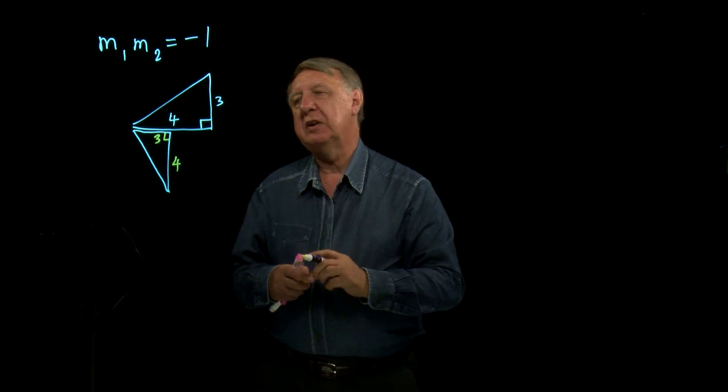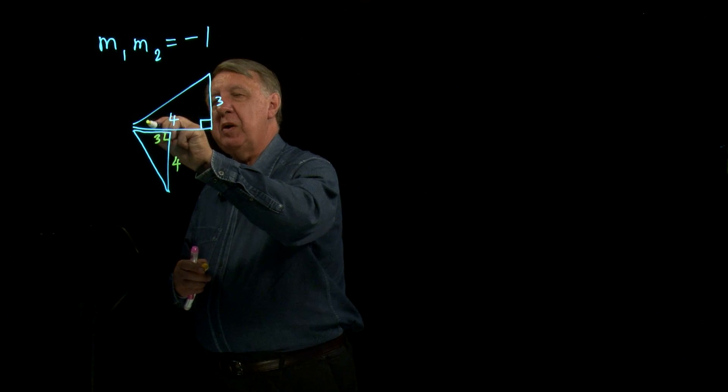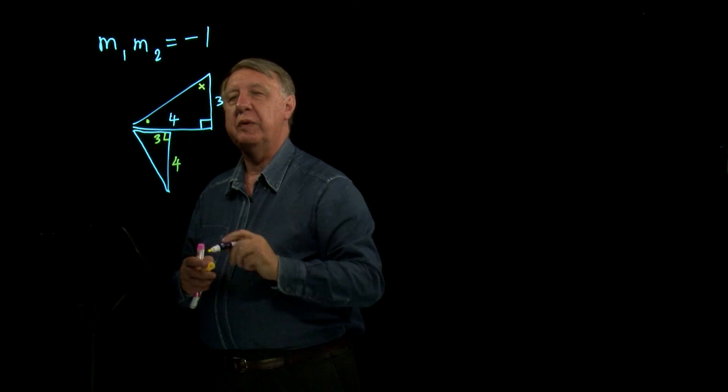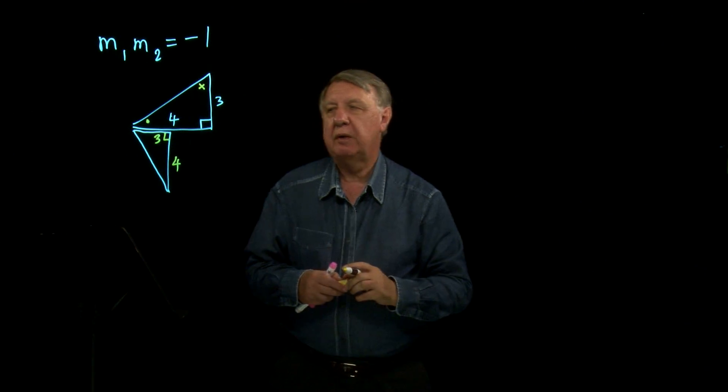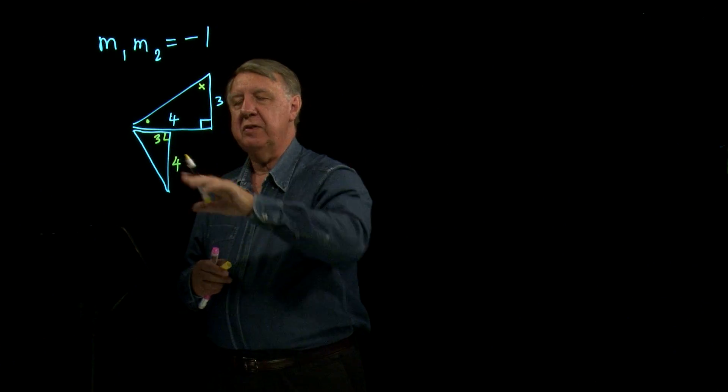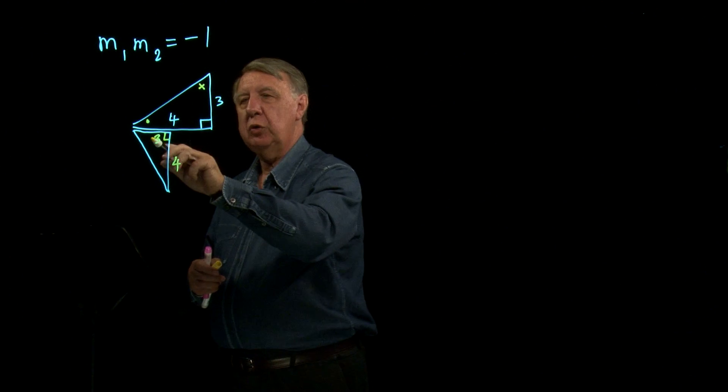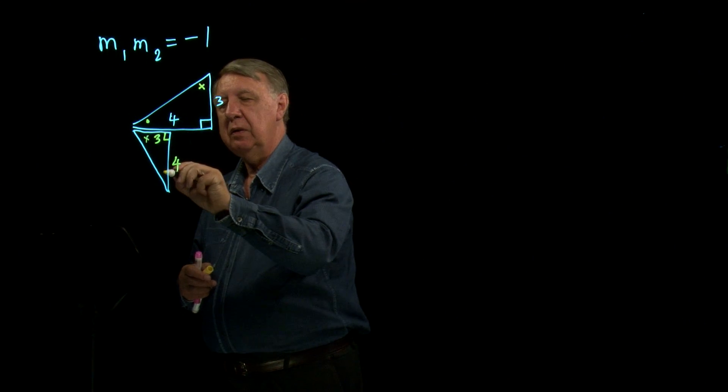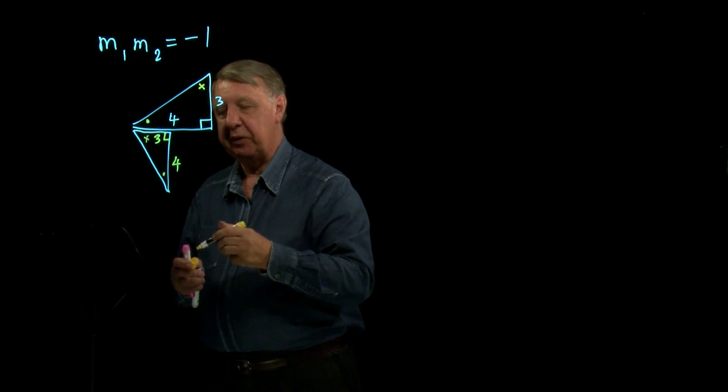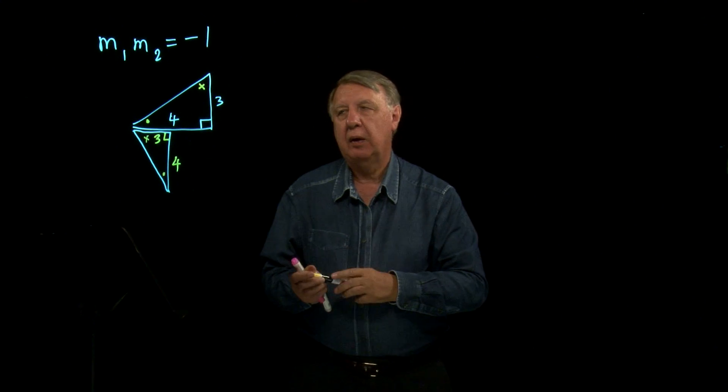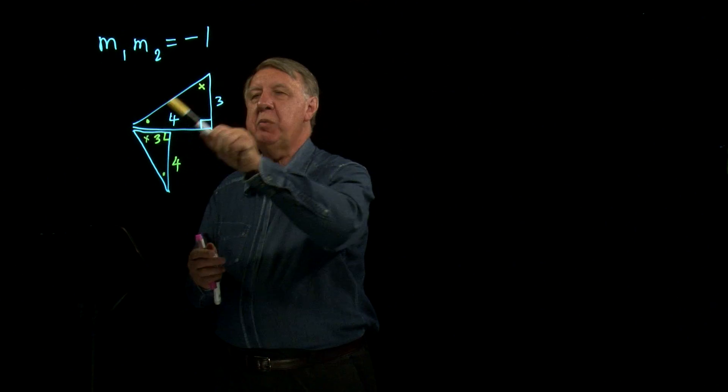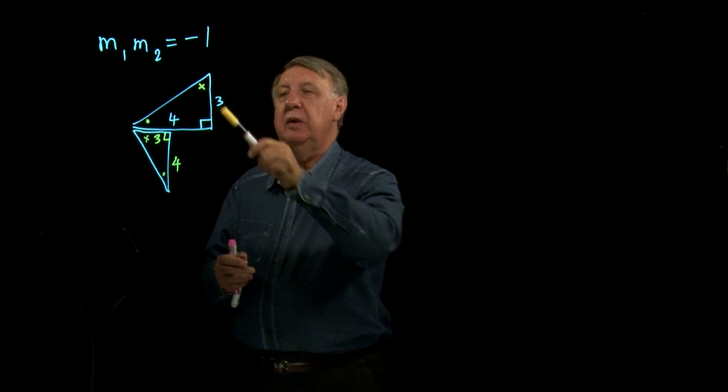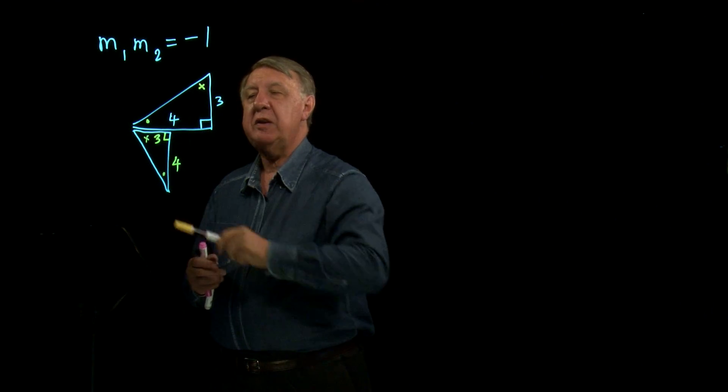So where are my perpendicular lines? Well, if we mark that angle with a blob and that angle with a cross, then when I switch these triangles around, then of course the cross angle will be there and the blob angle will be there.